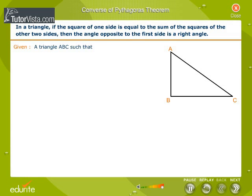Given a triangle ABC such that AB² + BC² = AC².